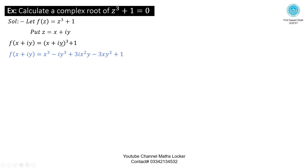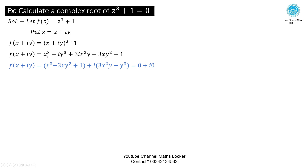Simplifying using the (a + b)³ formula: a³ + b³ + 3a²b + 3ab². Expanding: x³ − i·y³ + 3i·x²y − 3xy² + 1. Arranging real and imaginary parts: x³ − 3xy² + 1 is the real part.